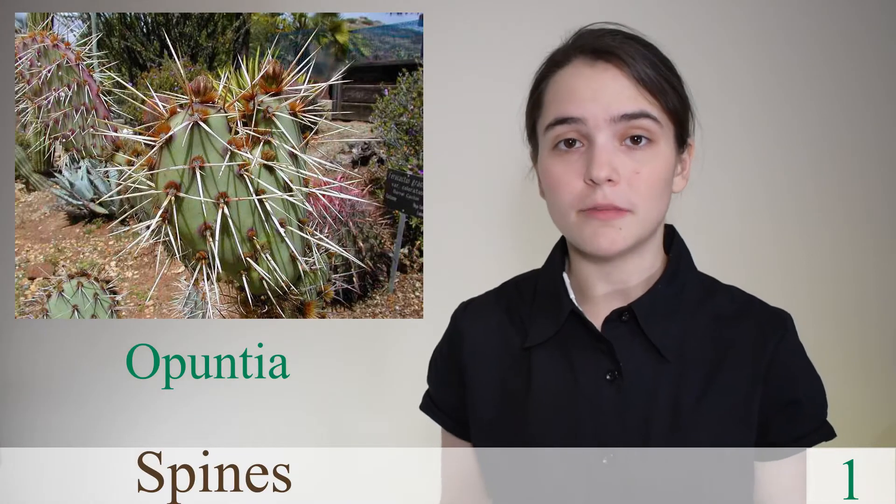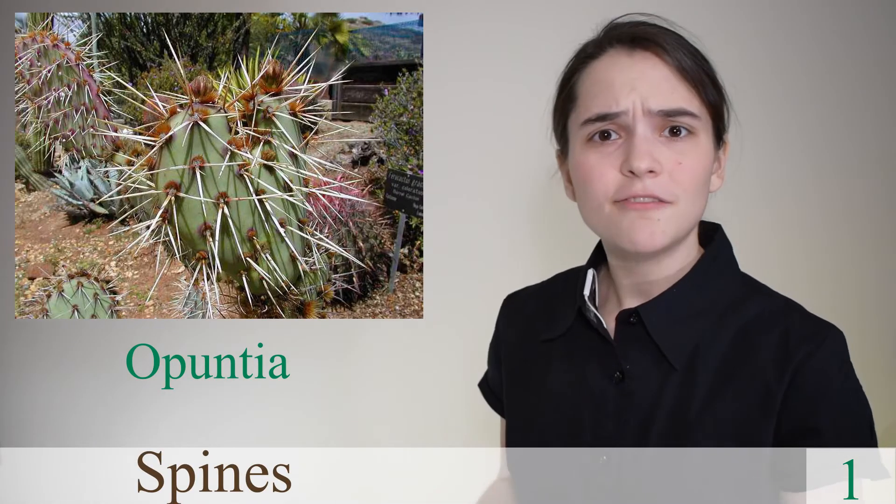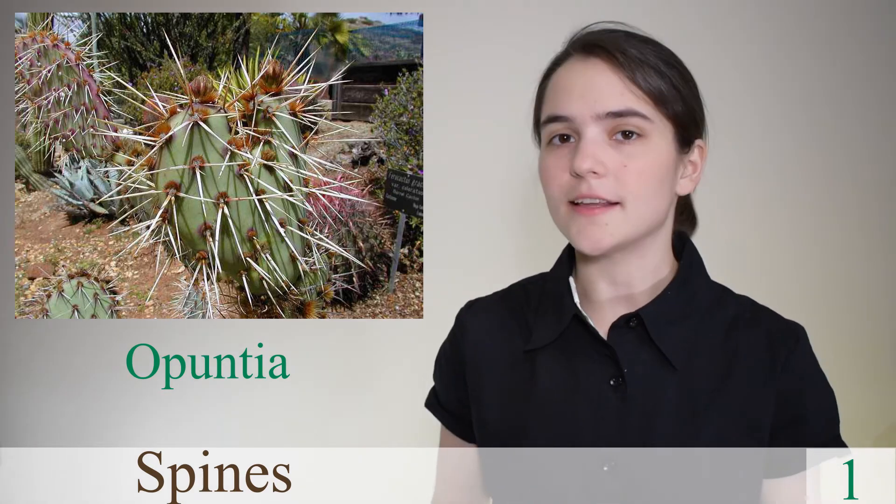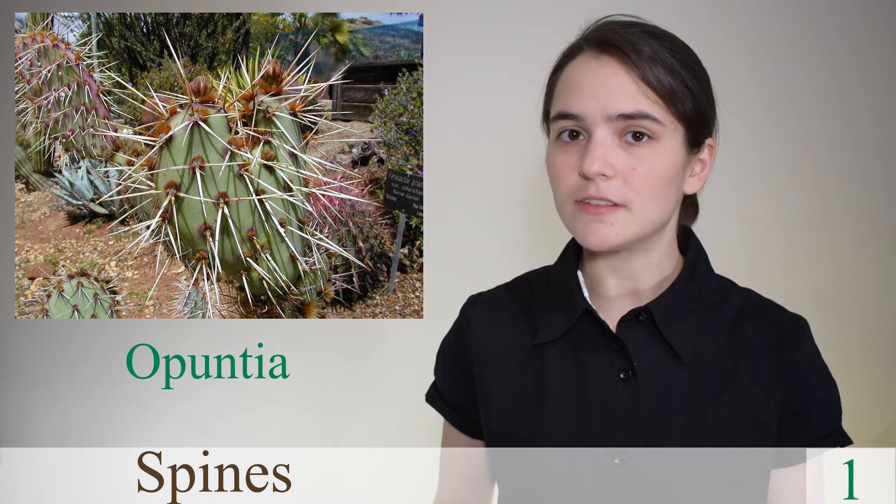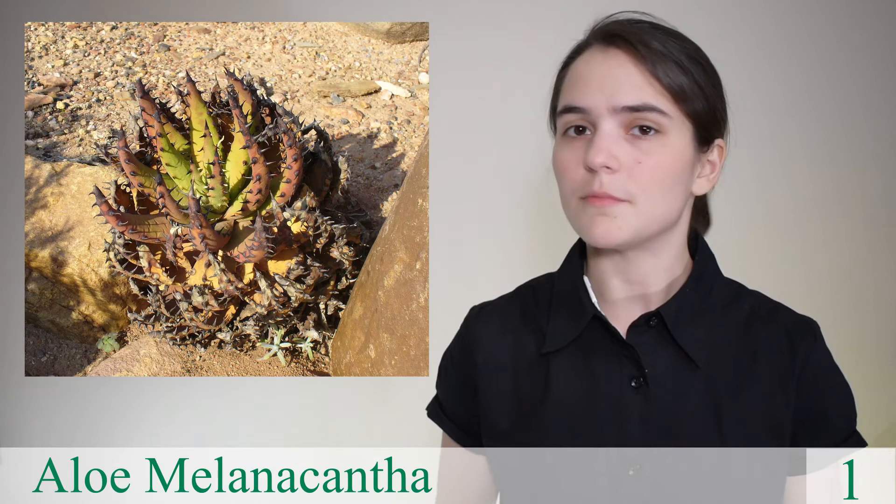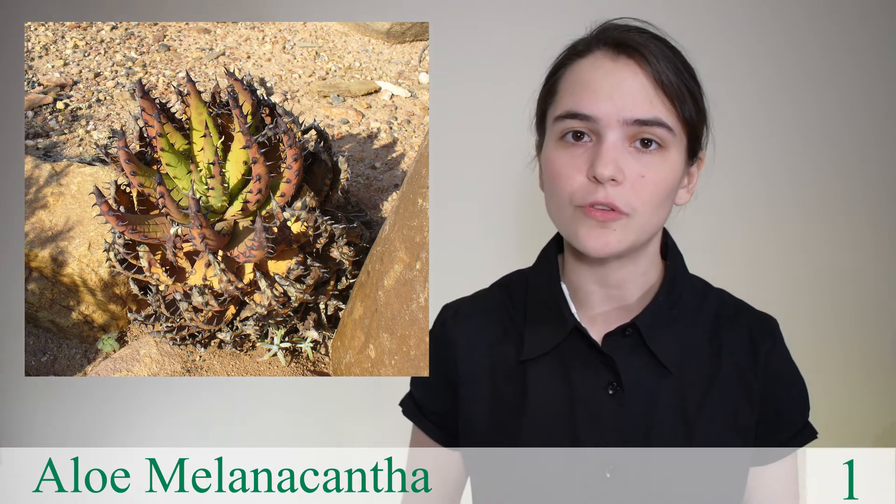Possibly the most familiar feature of cacti are their spines, which I kind of always thought were thorns, but that's not actually accurate. The spines are modified leaves and can vary greatly in appearance, shape, size, and color. Some succulents are often mistaken for cacti because they have thorns.